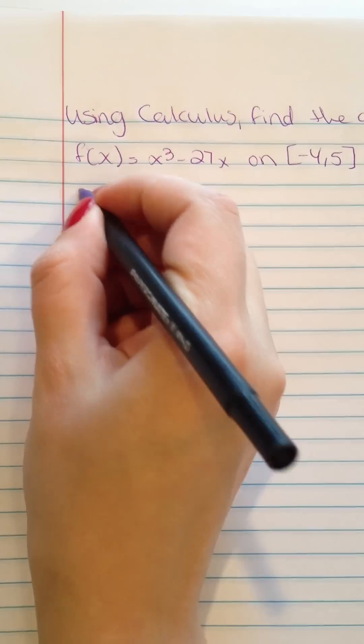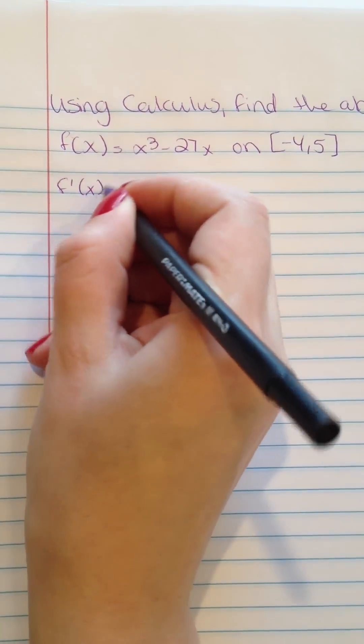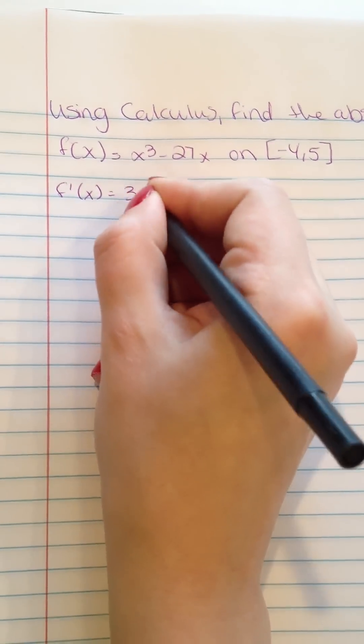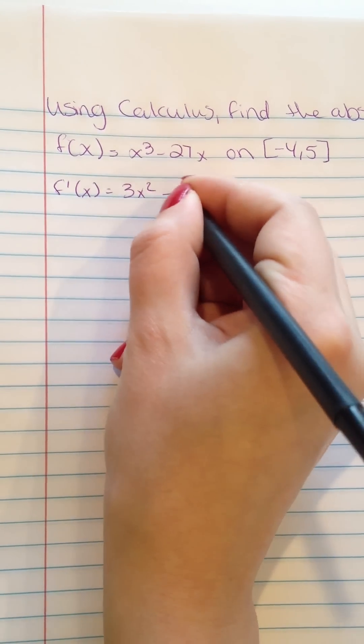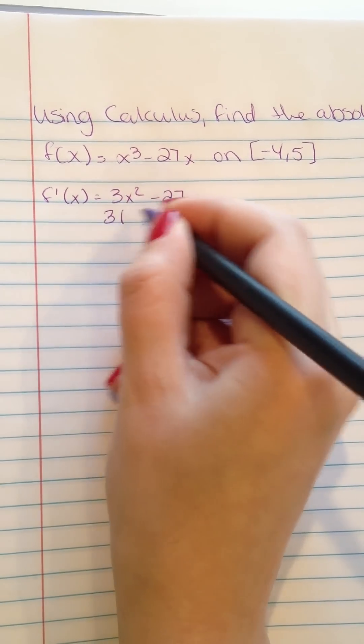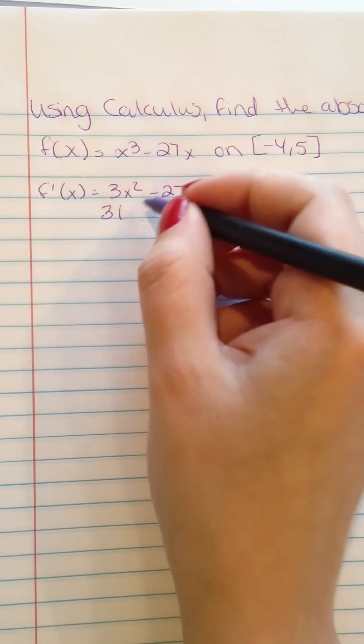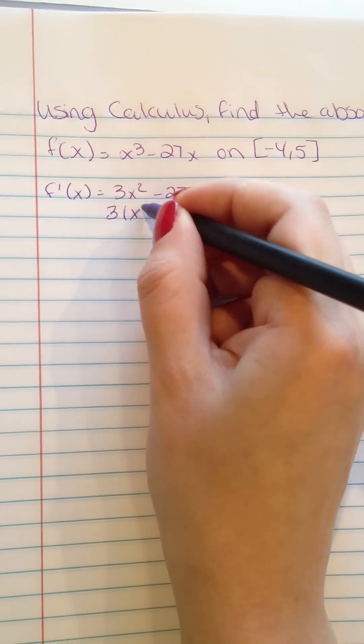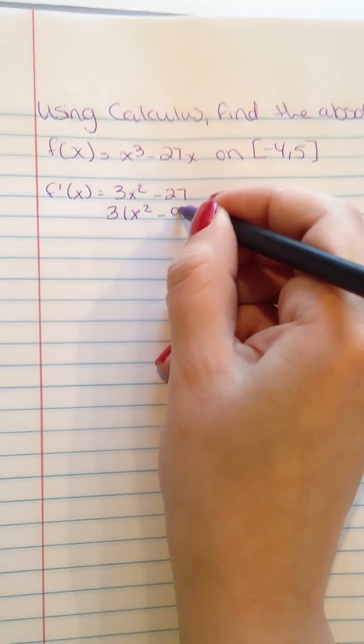We have to find the first derivative of the equation. f'(x) equals 3x² - 27, and then solve it out. I'm going to take 3 from both numbers, so x² - 9.